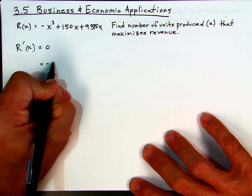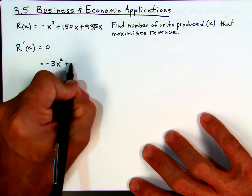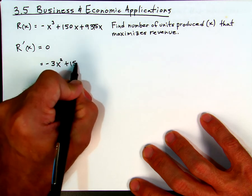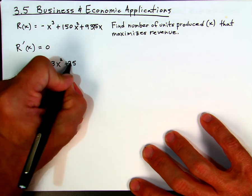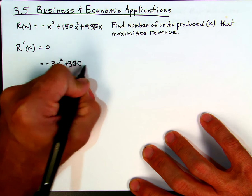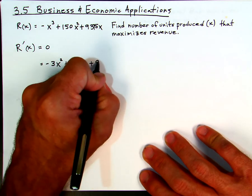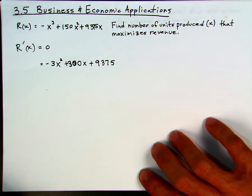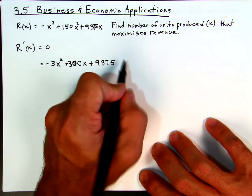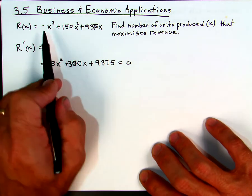The derivative here is going to be negative 3x squared plus 300x plus 9,375. So there's our derivative function.